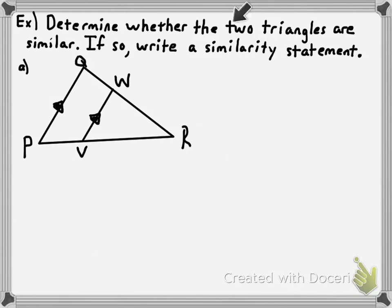In the rest of this video we're going to do two examples where you determine whether the two triangles are similar and, if they are, write a similarity statement. You'll notice I didn't give you any side lengths in either picture — all you need to do is compare angle measures. In the first picture, can you spot the two triangles? We've got a smaller triangle inside a larger triangle.